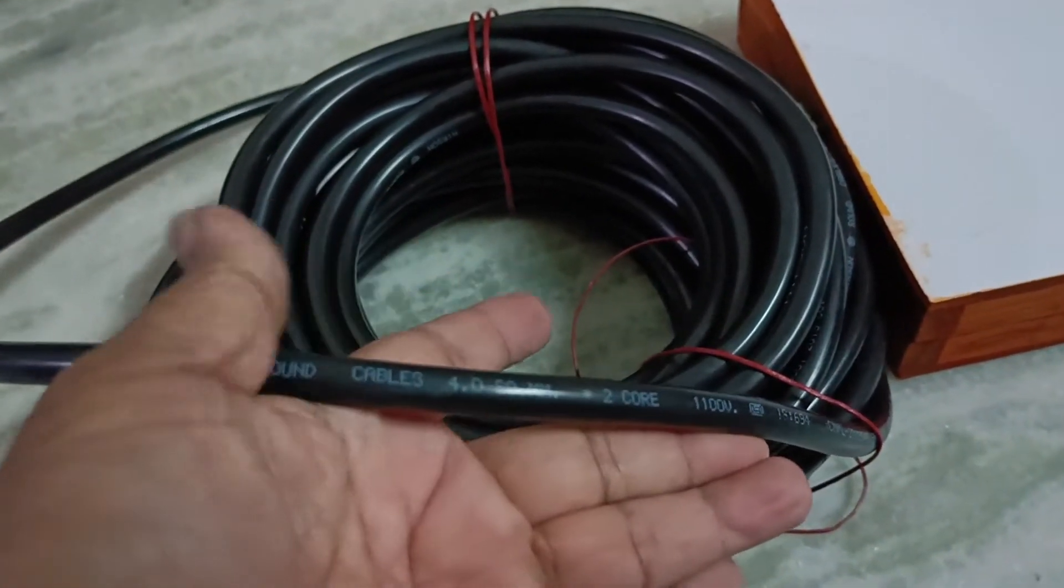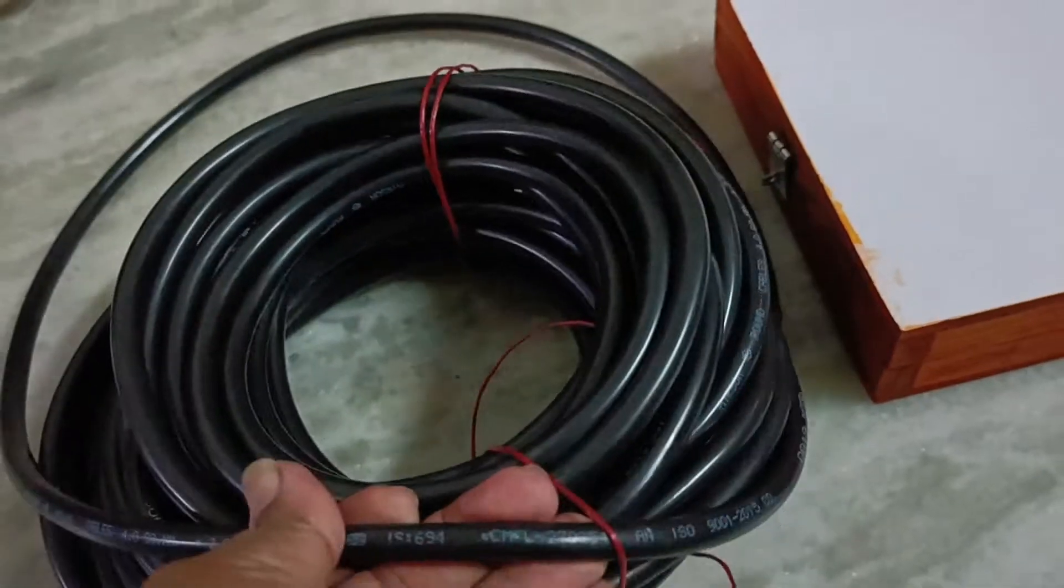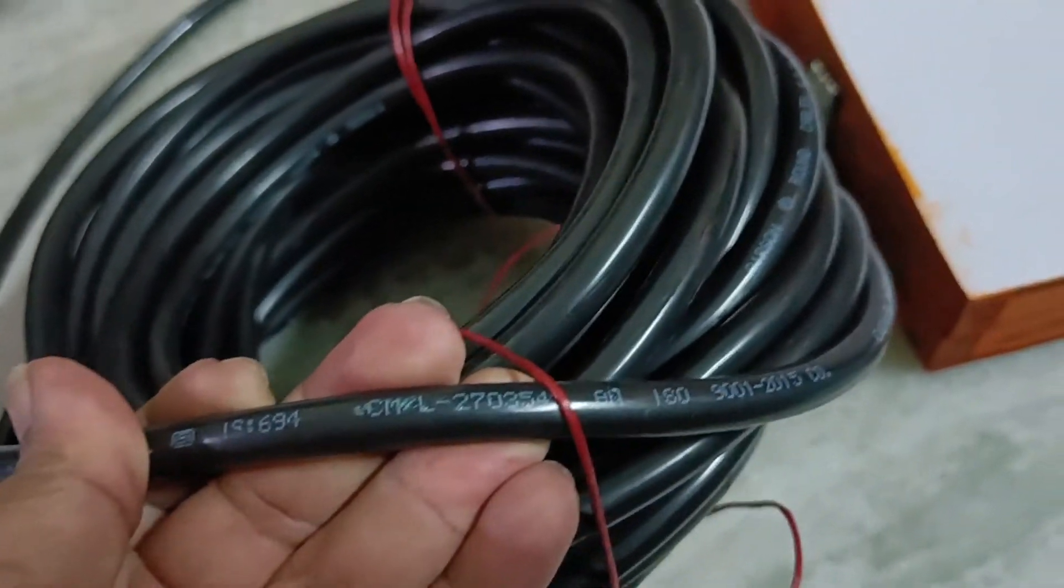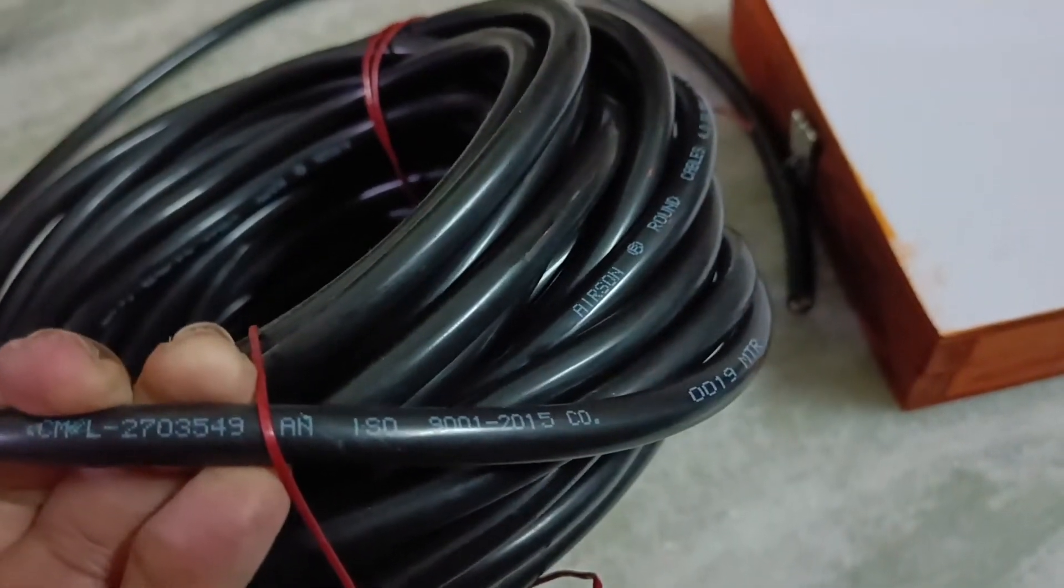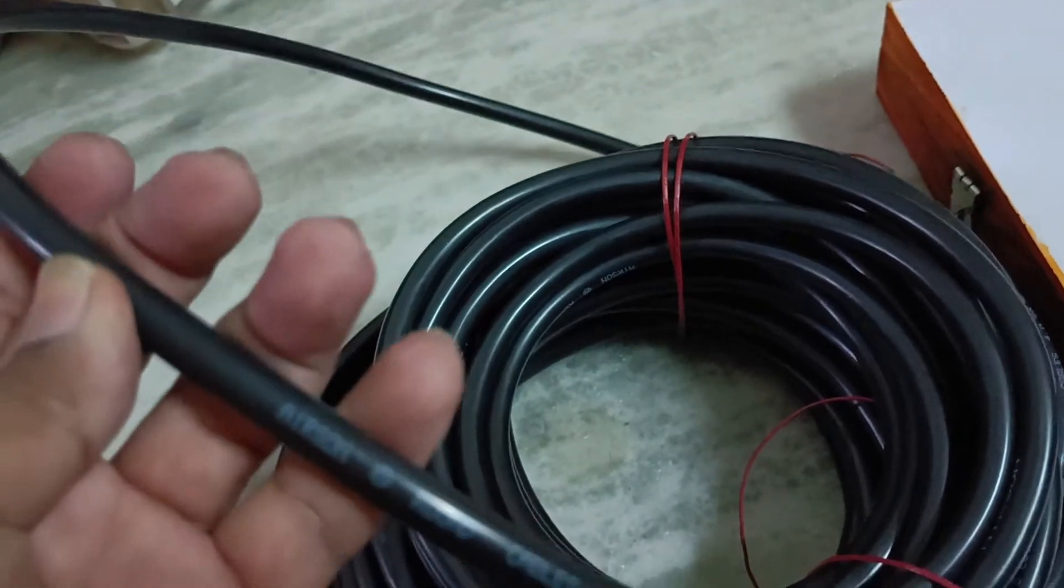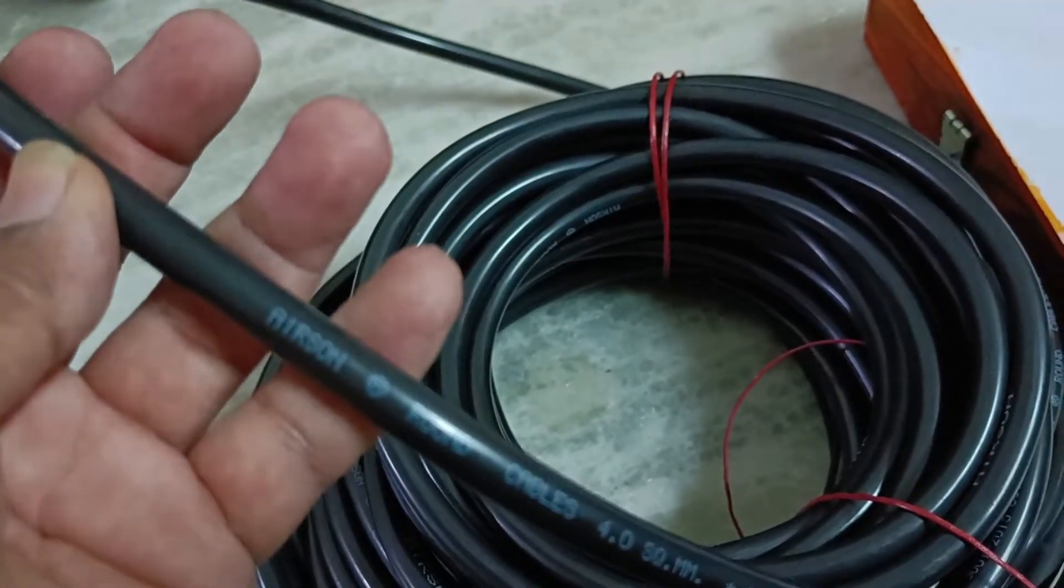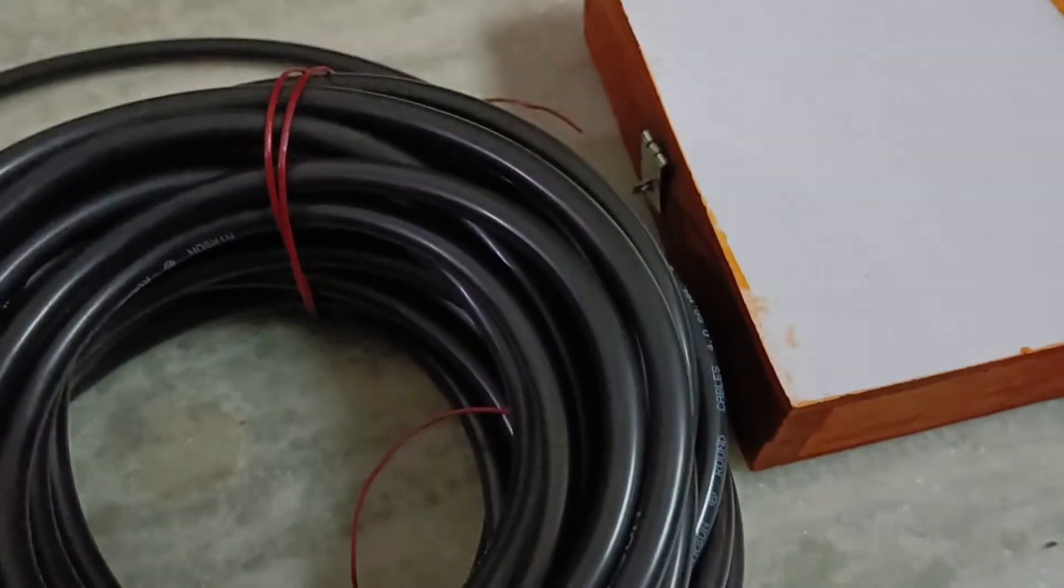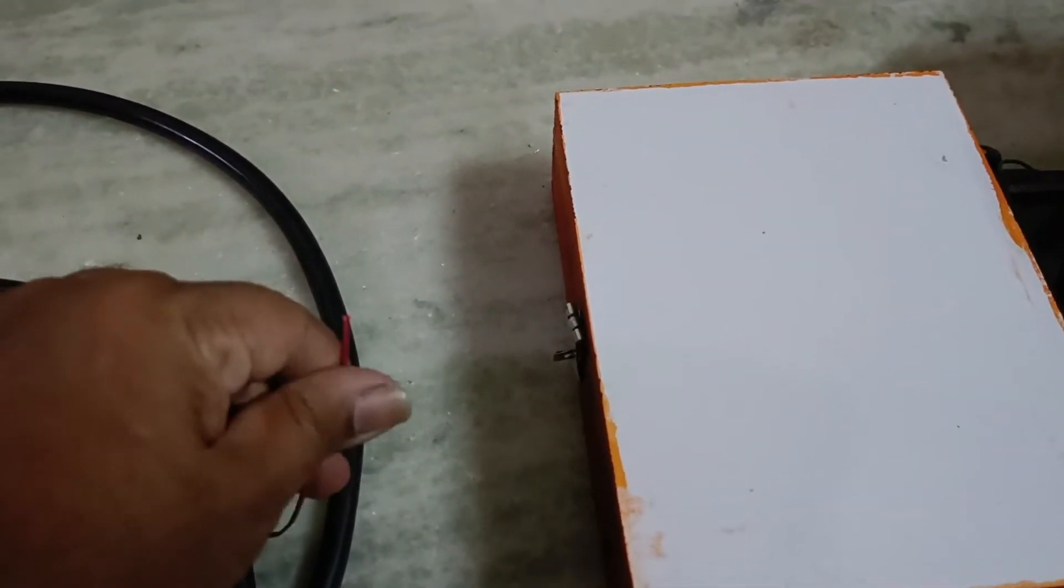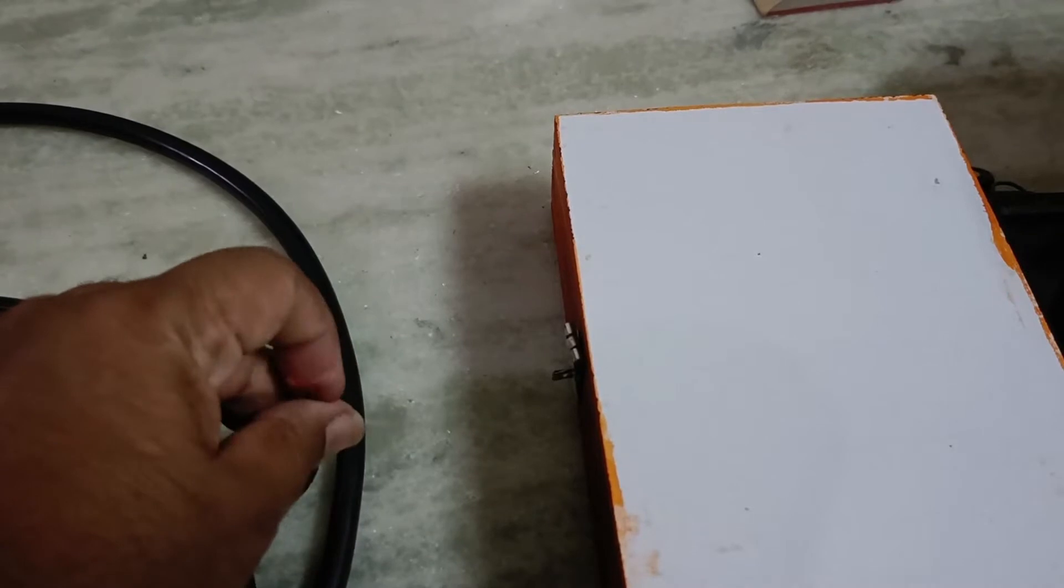Apart from this you will need a wall plug and another 10 or 15 meters of one square mm wire for earthing purpose.